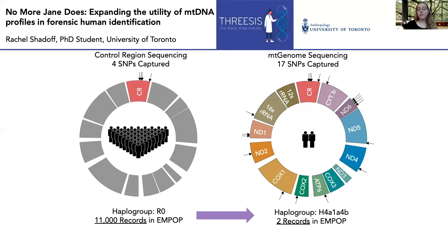The issue with mitochondrial DNA profiles is that they are limited in their power of discrimination. All members of a maternal lineage will share the same set of single nucleotide polymorphisms, also known as SNPs, preventing the identification of any single individual. Further, individuals with similar ancestral backgrounds will share a haplogroup, which is a set of mutations that belong to a common ancestor.